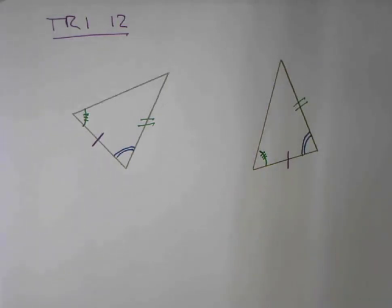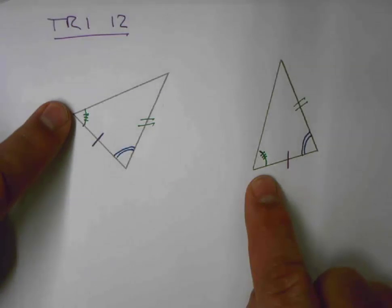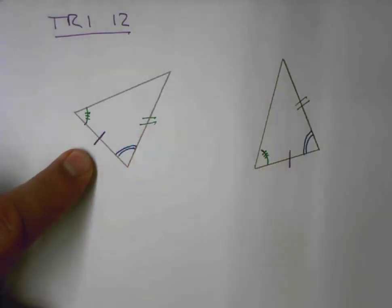That concludes our discussion of how we indicate congruent angles with rainbow-looking marks on the angles or sides with straight hash marks or dashes matching the number.